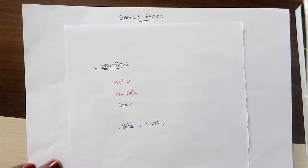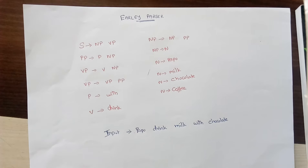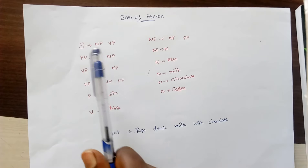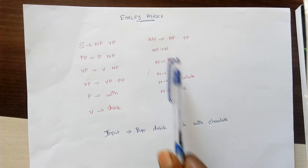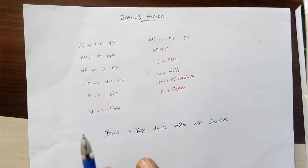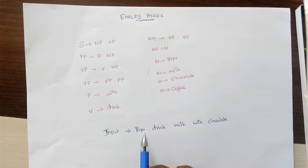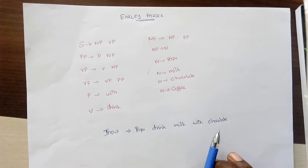When all elements are completely scanned, the parser generates a parse tree structure. Now let's take an example. Consider a grammar structure describing how a sentence can have a noun, verb, and so on. We will consider an input like 'papu drinks milk with chocolate' and check whether this sentence is grammatically correct according to the context-free grammar. We use a dot symbol starting from the beginning, and each time we scan an input we compare it and perform predict and complete operations, scanning each element one at a time.